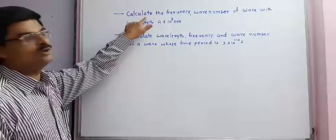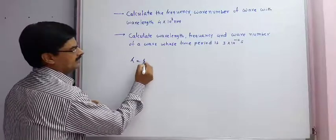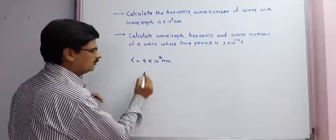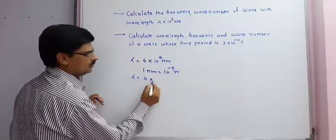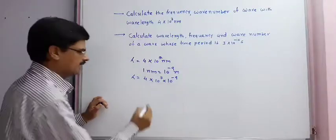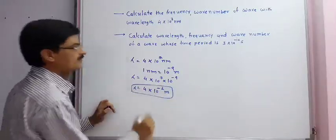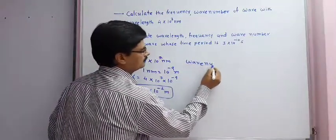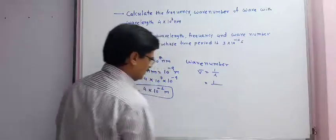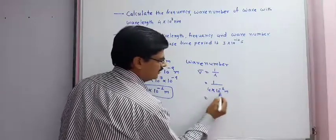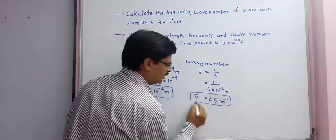Next sum: calculate the frequency and wave number of a wave with wavelength 4 × 10⁷ nanometers. First, convert lambda: 4 × 10⁷ nm = 4 × 10⁷ × 10⁻⁹ m = 4 × 10⁻² m. Wave number V-bar = 1 / lambda = 1 / (4 × 10⁻²) = 25 m⁻¹.